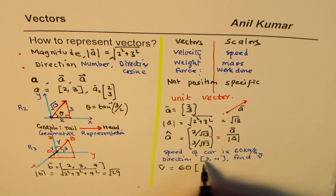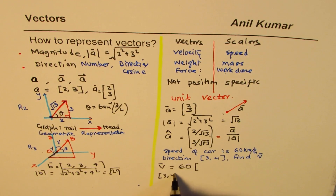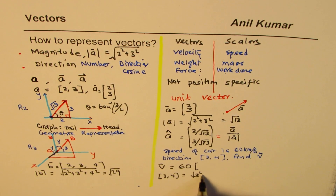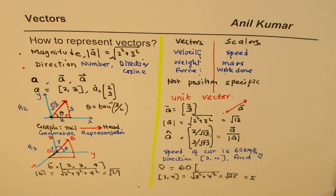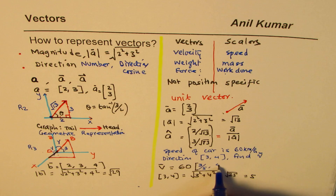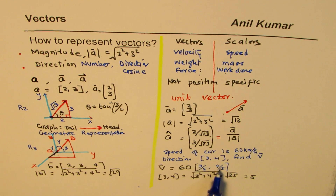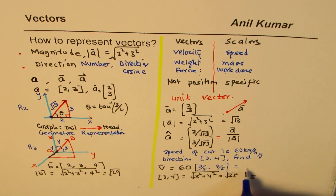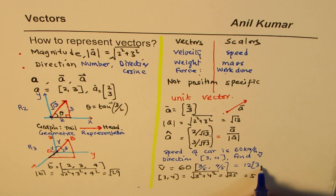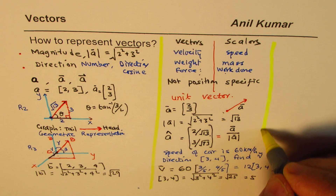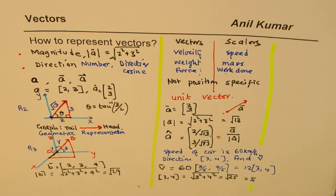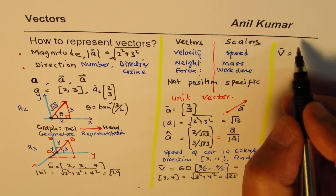So the unit vector is (3/5, 4/5). The velocity vector is 60 × (3/5, 4/5) = 12 × (3, 4). That is, the velocity is 12 times (3, 4), giving a magnitude of 60 and the given direction. Let's verify: magnitude = 12 × √(9 + 16) = 12 × 5 = 60. It works!